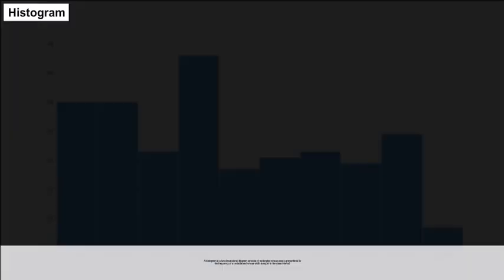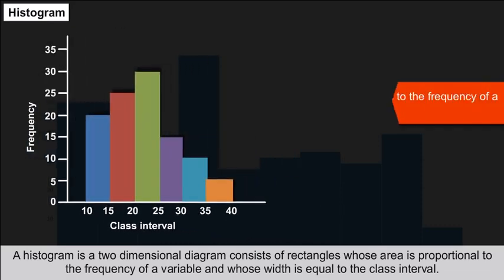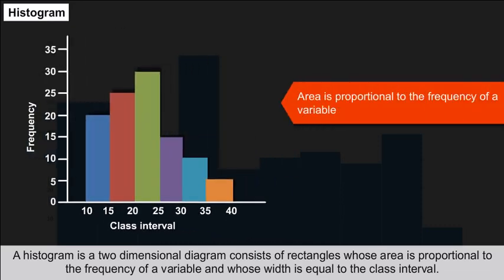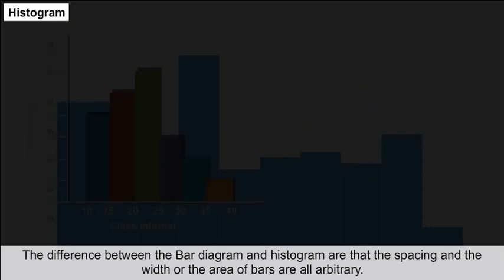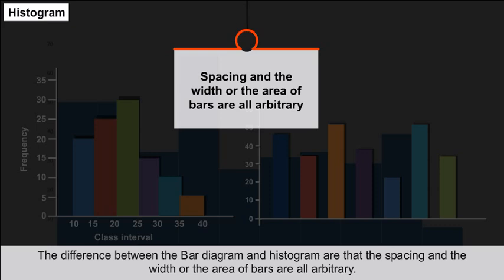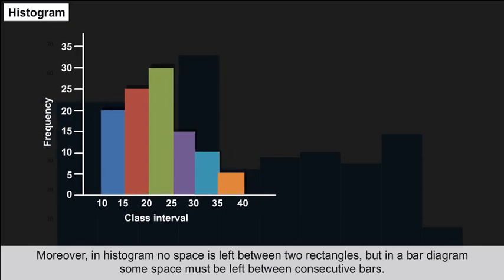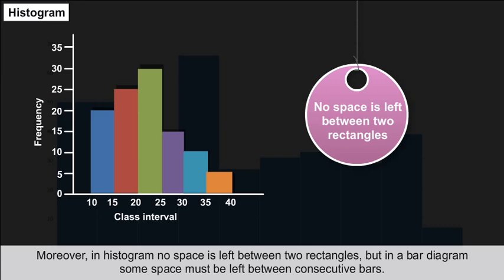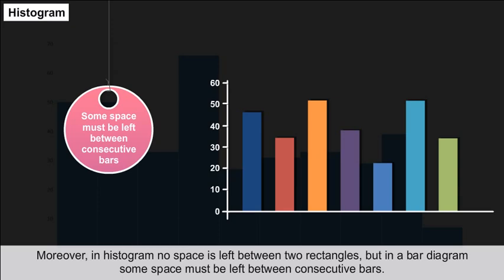Histogram: A histogram is a two-dimensional diagram consisting of rectangles whose area is proportional to the frequency of a variable and whose width is equal to the class interval. Unlike bar diagrams where spacing and width are arbitrary, in a histogram no space is left between two rectangles. In a bar diagram, some space must be left between consecutive bars.